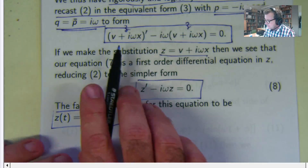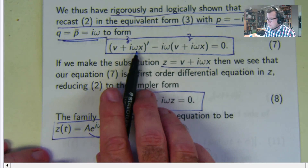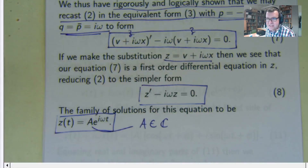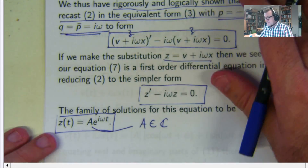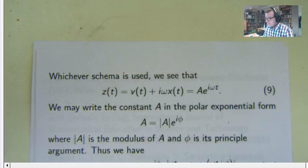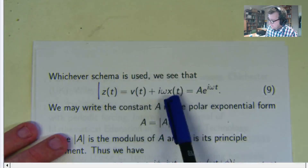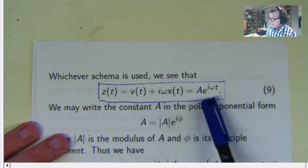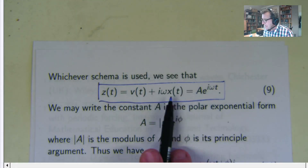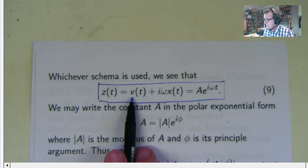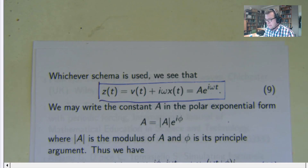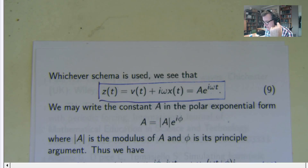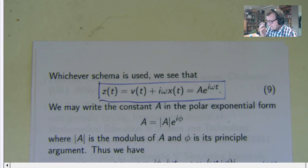So we've now solved it. What was Z again? Z was V plus i omega X — that's going to help us. Whichever way you solve that, you get Z equals V plus i omega X, and we found it to be this exponential expression. What I'm trying to do now is get X and V — the position and the velocity — and it turns out I can do that in one hit. Just stay with me. This is where the complex numbers come in.